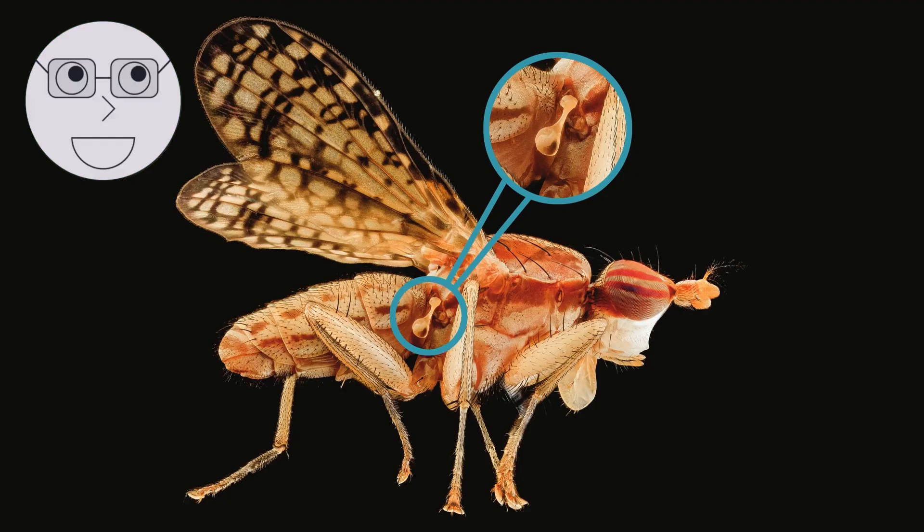A diagram of an insect's body highlighting the head, thorax, abdomen, legs, antennae, and wings.